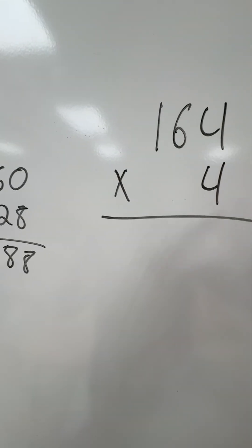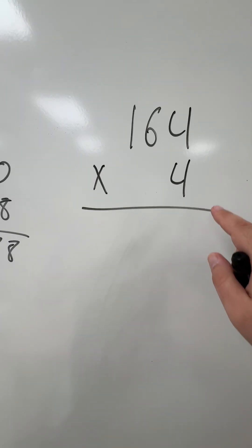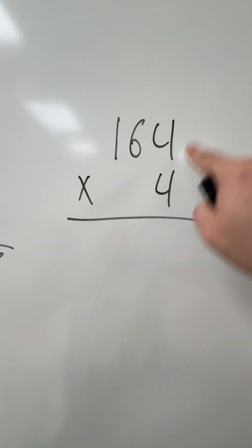So remember I work from the ones place going towards the hundreds place. So start with multiplying my 4 by all of these numbers.